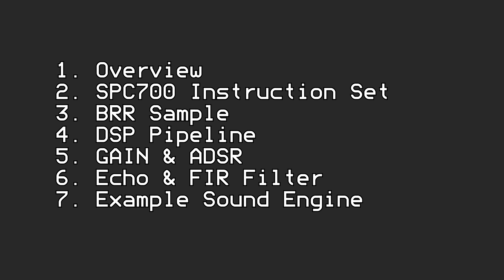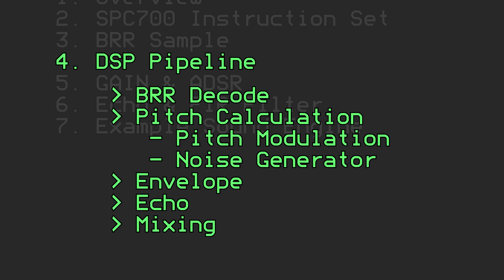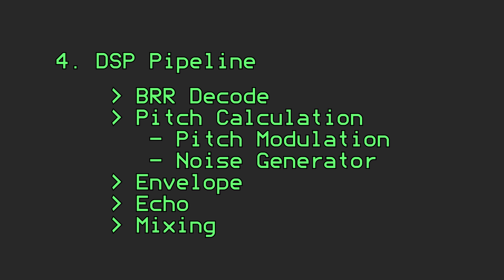This video is part 4 in a series about the Super Nintendo's sound system, the SPC700. In this video, we'll take a short look at the overall DSP pipeline to get a good feel for what it actually has to do to produce sounds and music. We already covered the BRR sample processing in the previous video, which is the starting point of the pipeline, but here we'll look at how those samples are manipulated and combined to produce the final stereo output of the system. We'll also go into detail about the pitch modulation and noise generator features, since they are seldom-used features that don't really fit in with any other part of this video series.